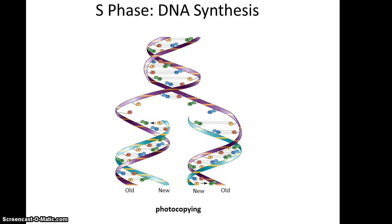If you think about DNA synthesis during S phase, it's possible to think of it sort of as photocopying. You have that double helix, and each side has nucleotides that bind only to one specific partner: T's bind to A's, A's bind to T's, C's bind to G's, and G's bind to C's. So when you split the double helix, you can reform the second strand by using the older strand as a template.